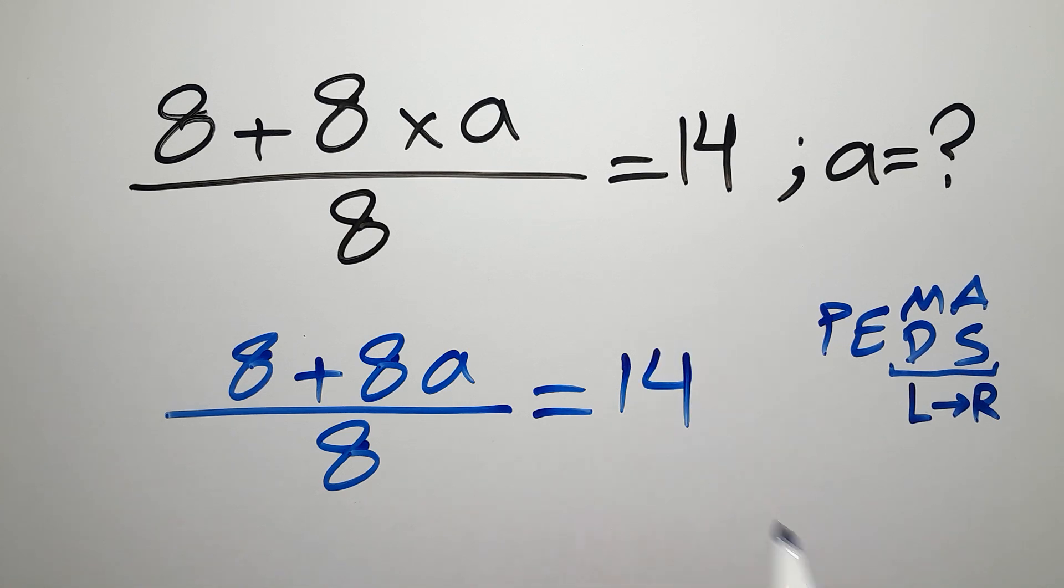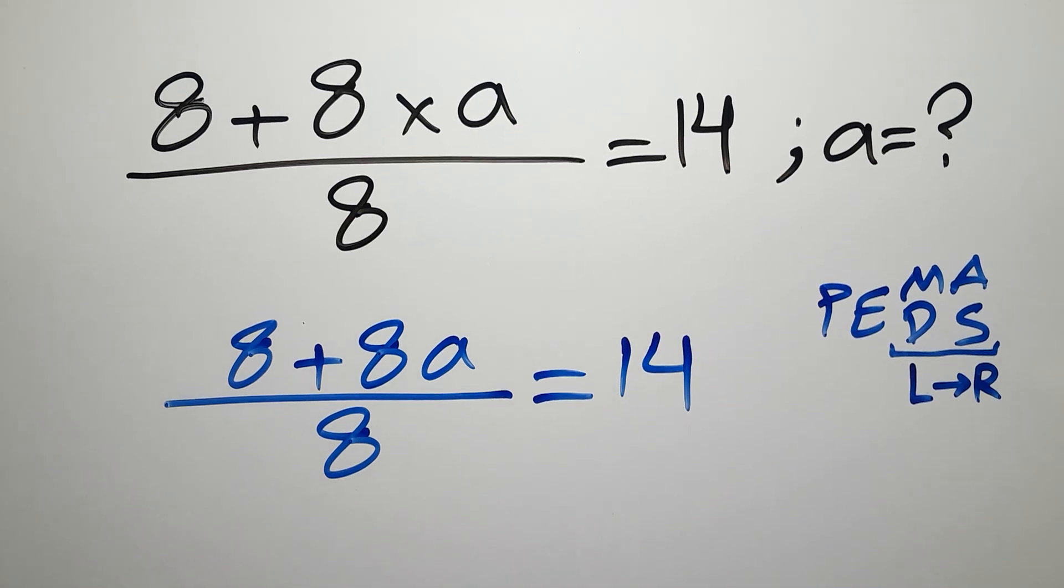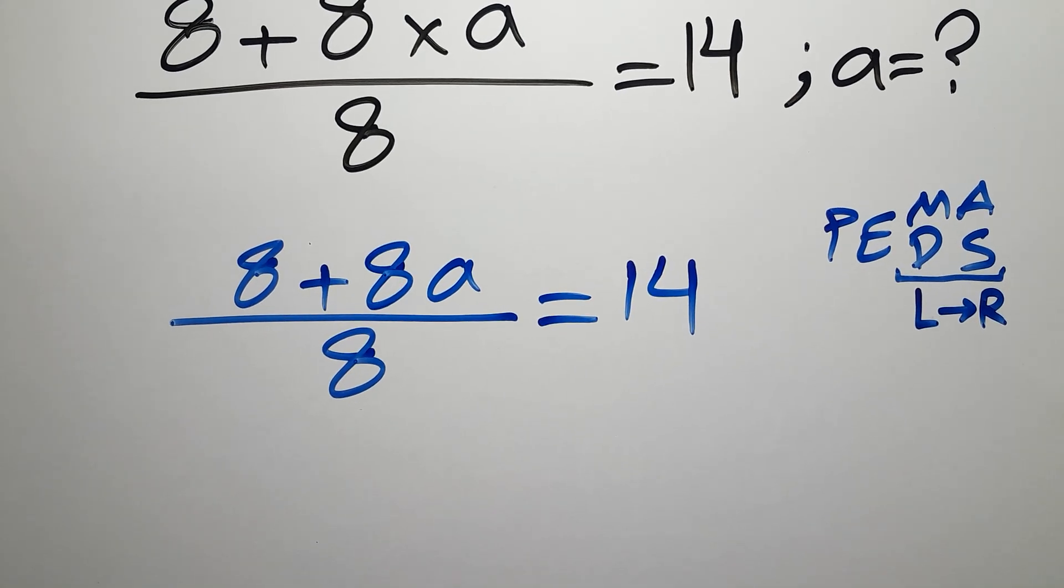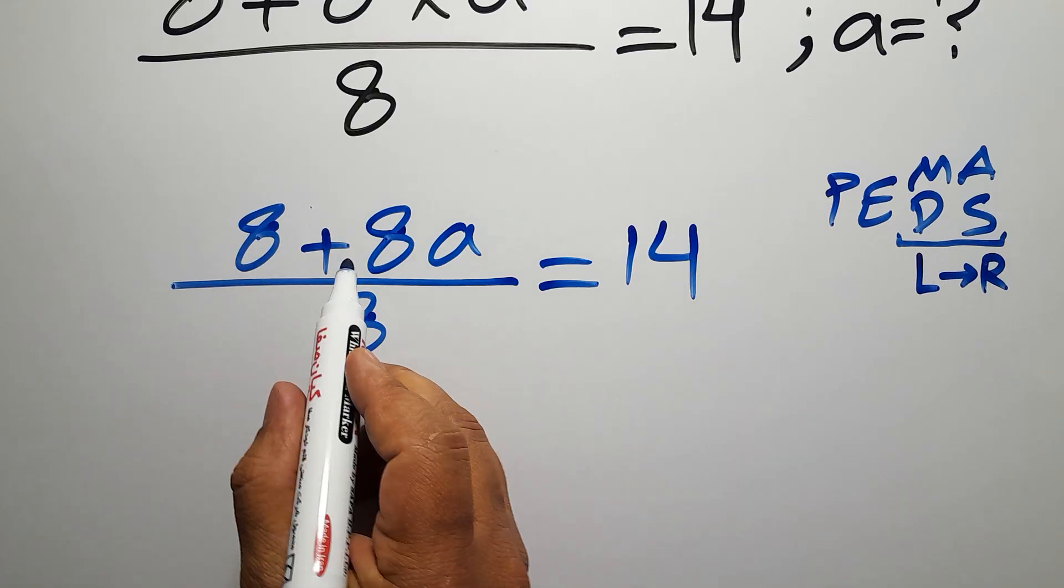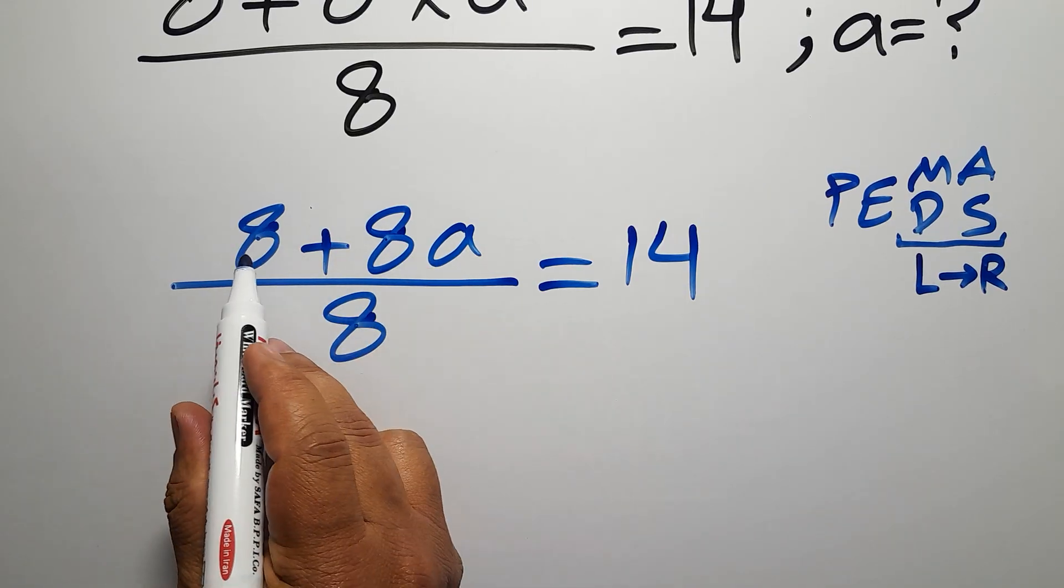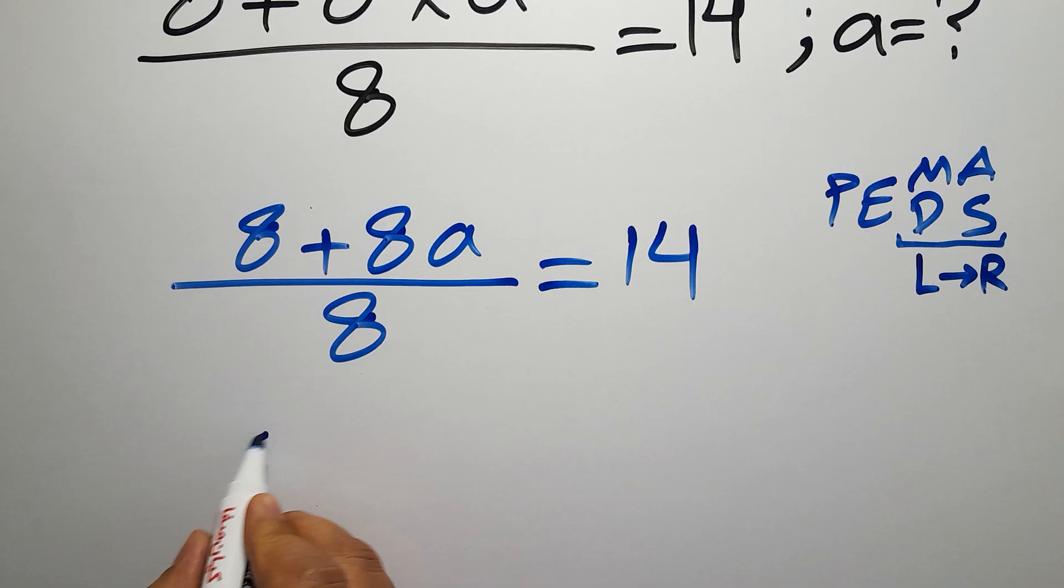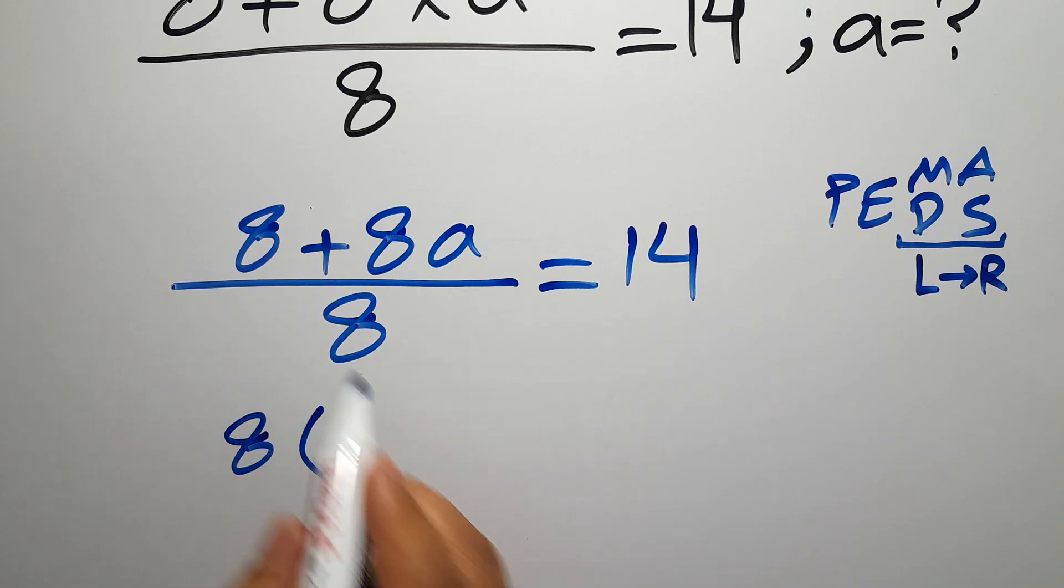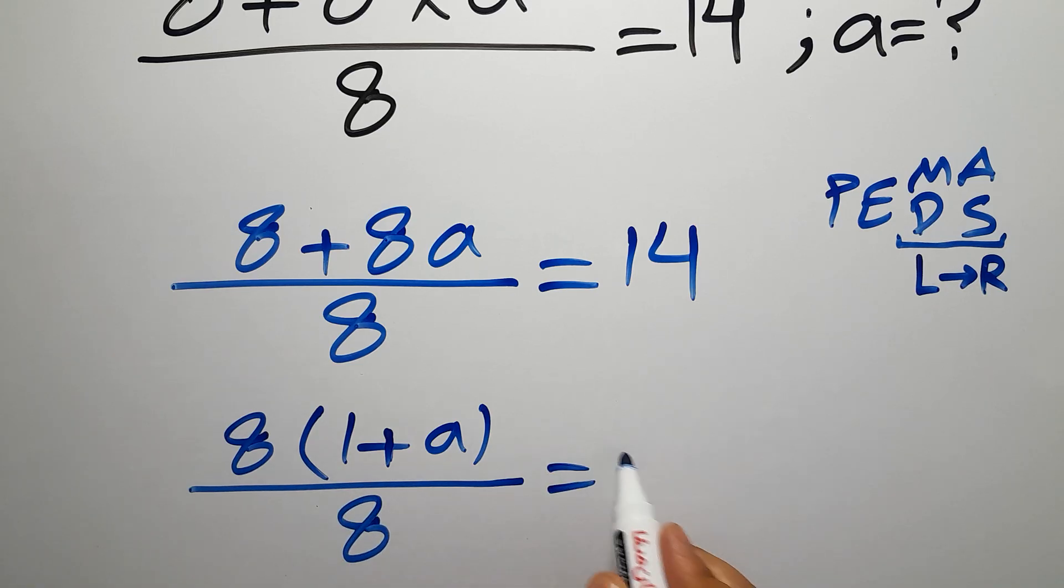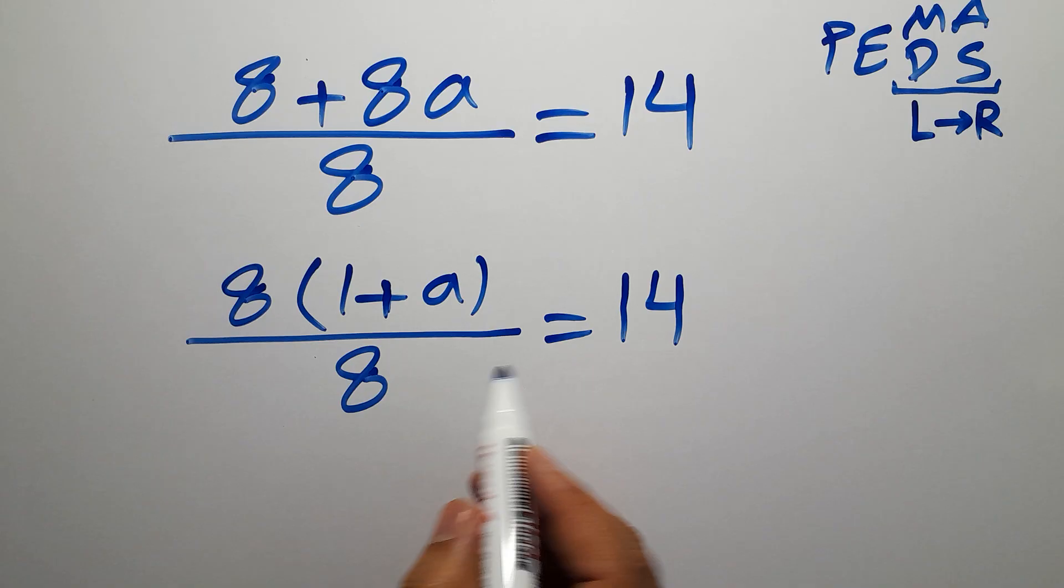Now 8 is the same between these two terms, so we can easily factor it: 8 times 1 plus a, over 8 equals 14. Now on the left-hand side, this 8 and this 8 can cancel each other out.